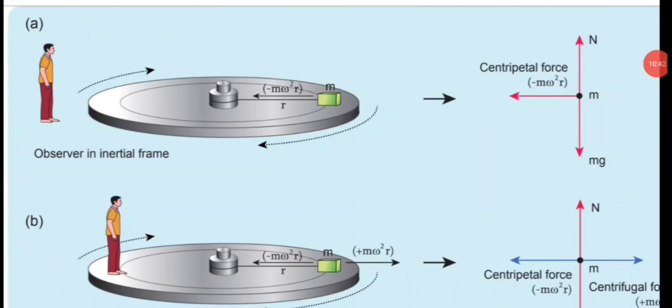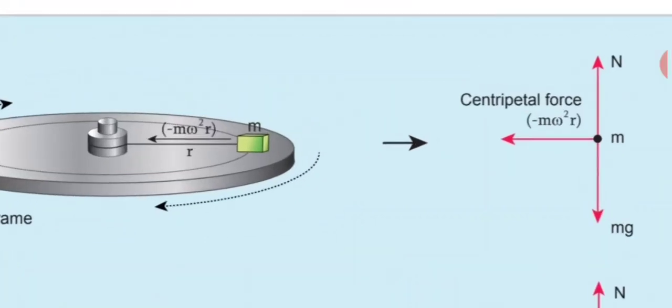I hope you understood about centrifugal force. Centripetal force is a real force exerted on the body. Centrifugal force is not a real force — it does not arise from gravitational force or tension. Centripetal force can act in both inertial and non-inertial frames, but centrifugal force can only act in the non-inertial, rotating frame. Centripetal force acts towards the center of circular motion, while centrifugal force acts outward from the axis of rotation. We have finished the third unit and from the next video we will start the fourth unit. Thank you for watching.